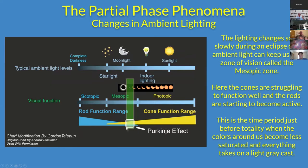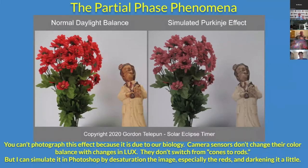We can spend time in a period of vision called the mesopic zone. The mesopic zone is a zone of lux where our cones are no longer functioning effectively because there aren't a lot of photons, and our rods want to start to kick in because it's getting towards night vision. About five minutes before totality, the colors in our surroundings become desaturated and everything around us looks like we've put on a pair of light gray sunglasses — things get a silvery cast. This is called the Purkinje effect.